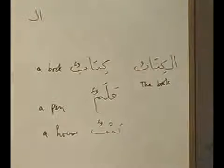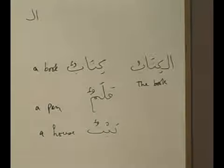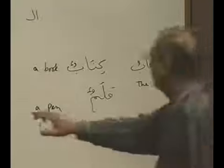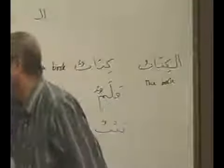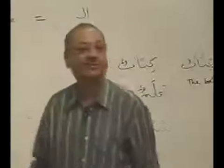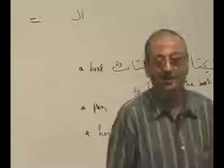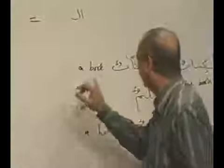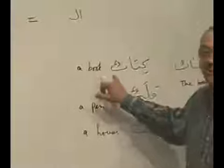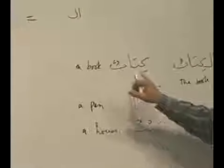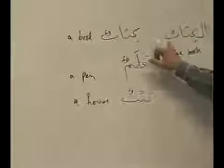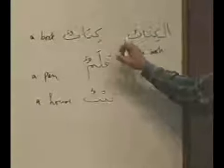As soon as I put 'al', like a magic, one vowel sign gets dropped. Instead of 'bun', it becomes 'bu'. Got the idea?